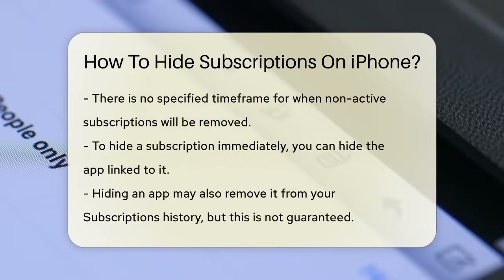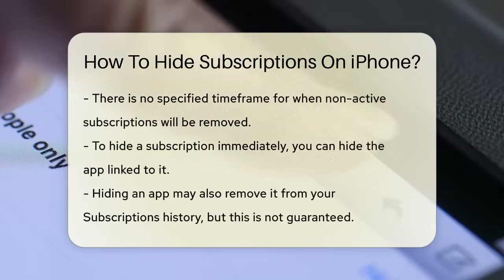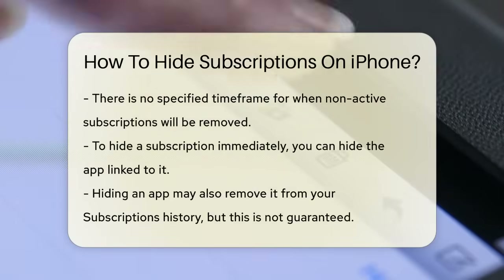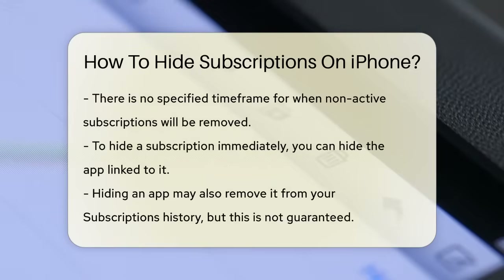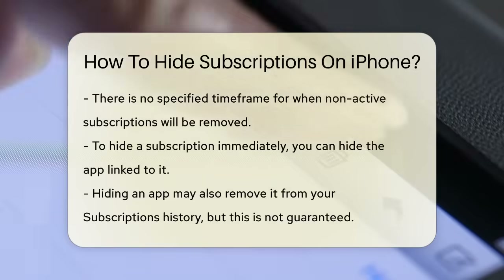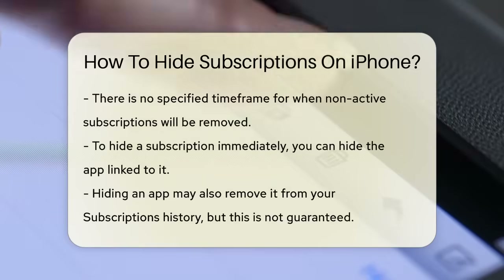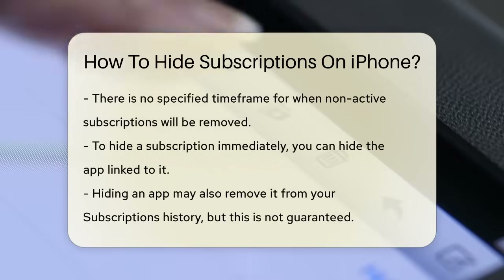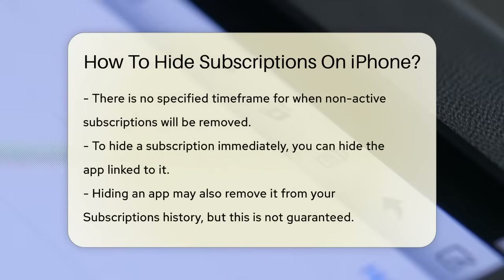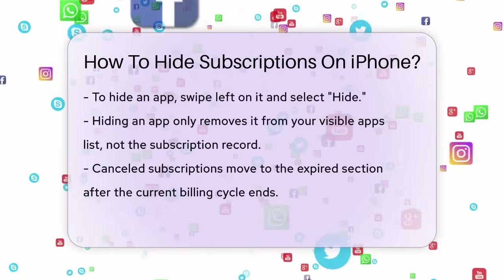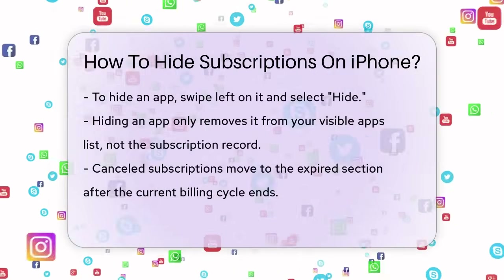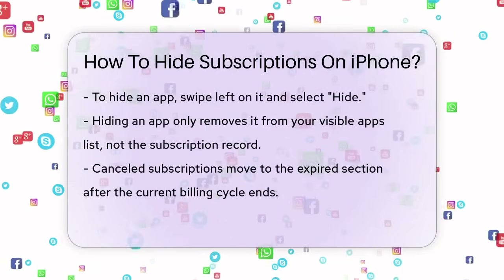If you're looking for a way to hide subscriptions from your App Store history immediately, there's a partial solution. You can hide the app associated with the subscription from your downloaded apps list. For example, if you have a subscription to Spotify, you can hide the Spotify app from your list. Depending on how the app and Apple handle the subscription, this might also hide it from your subscription history, but this isn't guaranteed.